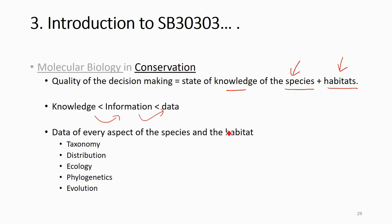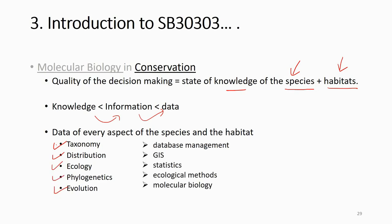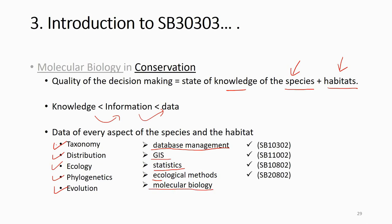Knowledge comes from information, and information comes from data. Data for every aspect of the species and habitat is very important. For example, you need data on taxonomy — you need to know what species are there. You need data on distribution — where the species can be found, whether there are any endemic species. You also need data on ecology, phylogenetics, and evolution. To get all this data, you need skills and tools: database management for taxonomy, GIS for distribution, statistics and ecological methods for ecology, and molecular biology tools for phylogenetics and evolution.